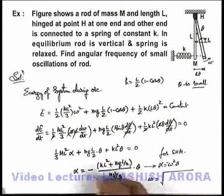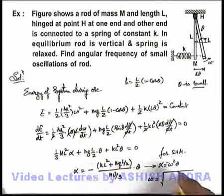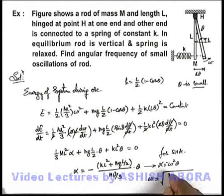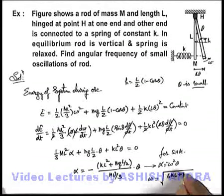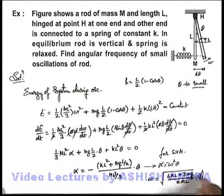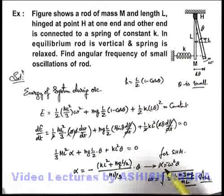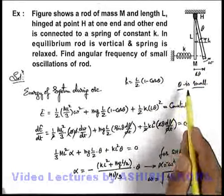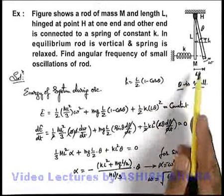And just simplifying the terms we'll get it as √[(6kL + 3mg)/(2mL)]. That is the answer to this problem, it is the angular frequency of small oscillations of the rod for which we calculated for small values of θ.